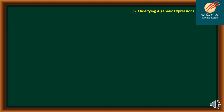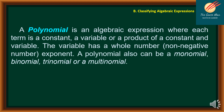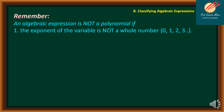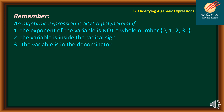There is a special type of algebraic expression called a polynomial. A polynomial is an algebraic expression where each term is a constant, a variable, or a product of a constant and variable, and the variable has a whole number, non-negative exponent. An algebraic expression is not a polynomial if: the exponent of the variable is not a whole number, the variable is inside the radical sign, or the variable is in the denominator.